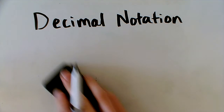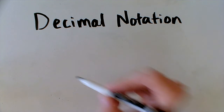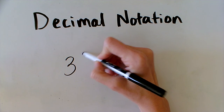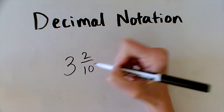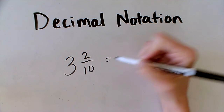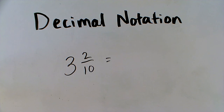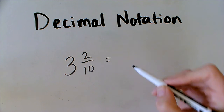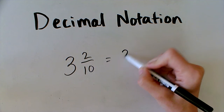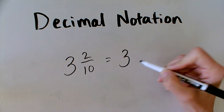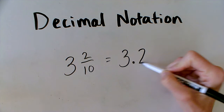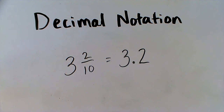Let's look at an example with a whole number. If I were to write the mixed number three and two tenths, now I do have something in the ones place. The whole number three is worth three ones, so I'll have a three in the ones place and two tenths. Notice how the two ended up in the tenths place.